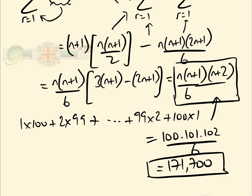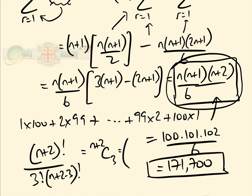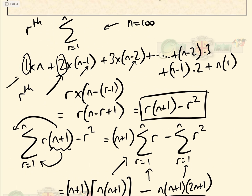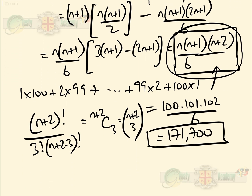We've answered the thumbnail question, but the interesting part is that the formula n(n+1)(n+2)/6 can also be written as (n+2)! / (3! × (n+2−3)!), which is C(n+2, 3) — or in another notation, C(n+2, 3). So it's intriguing: why does this sum equal C(n+2, 3)?